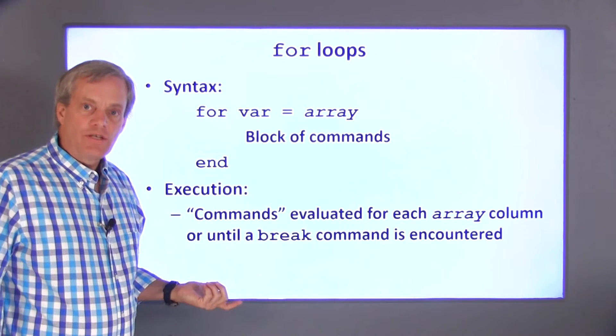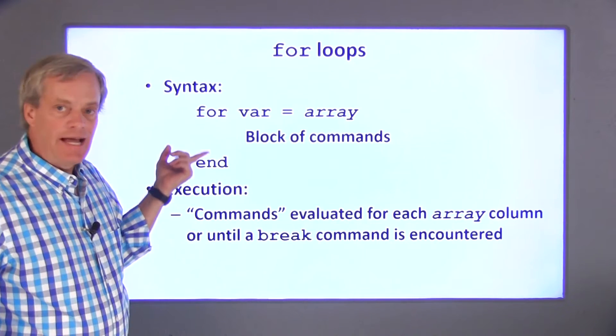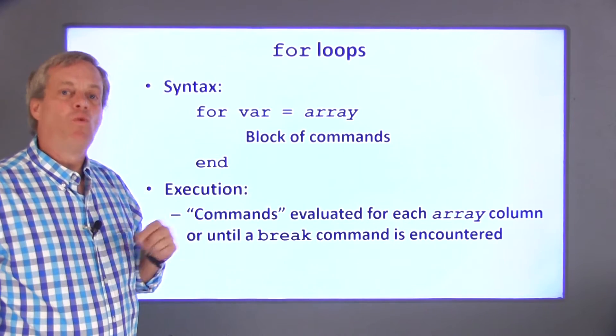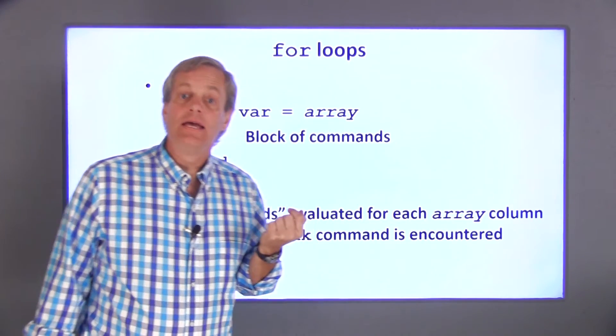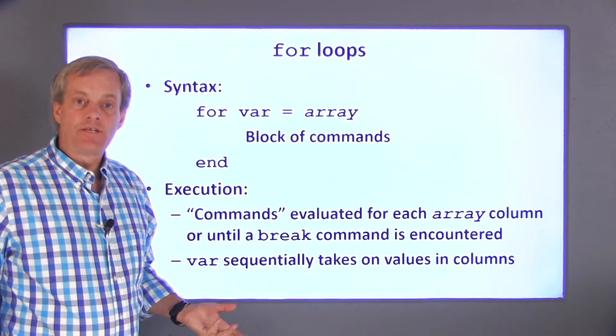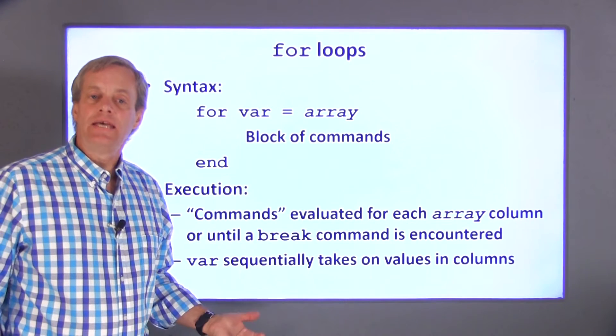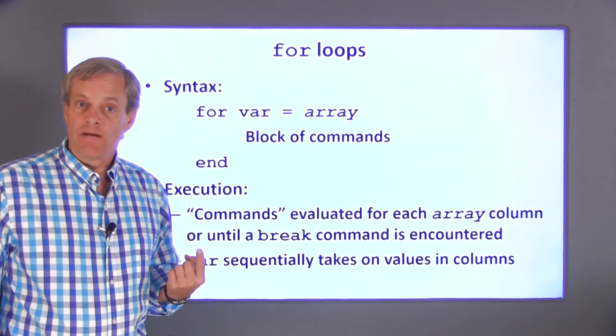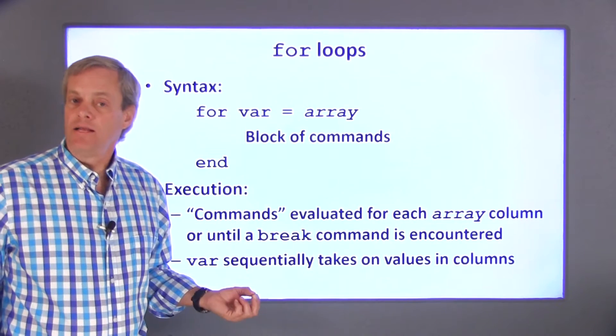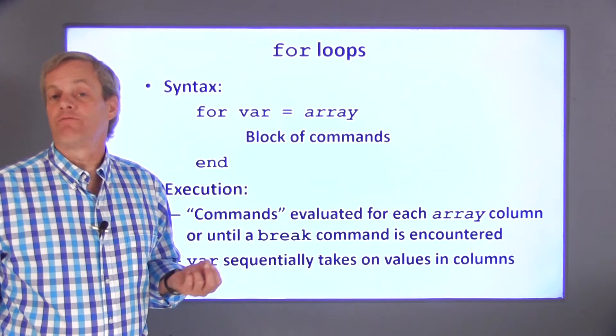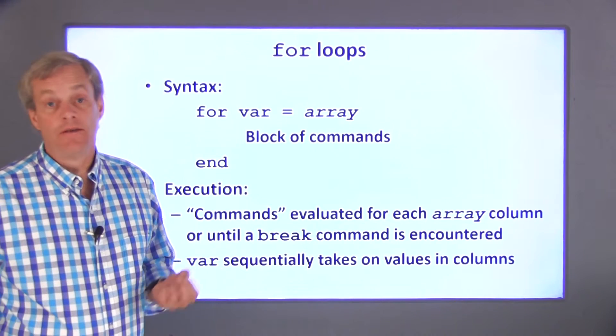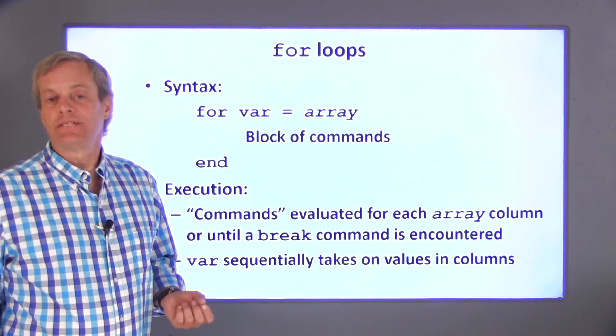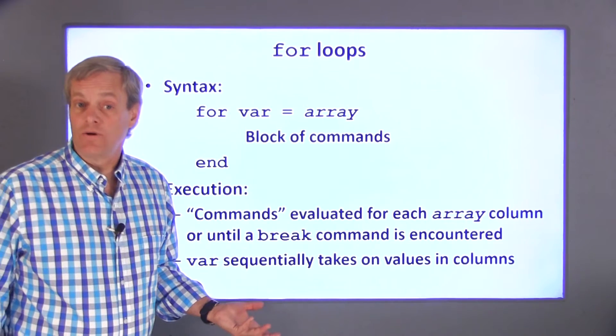When the code is executed, the commands inside this loop are evaluated once for every column in this array. Each time these commands are executed, var sequentially takes on the values in the columns in the array. So the first time through the loop, var can be a column vector containing the elements in the first column. The second time through the loop, var contains the elements in the second column of the array, and so on.